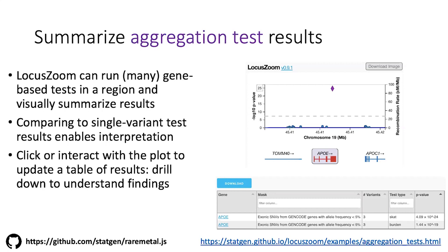If we're using it in LocusZoom, we can have LocusZoom show the results of all the aggregation tests run in a region. On the right, one gene is highlighted in red, meaning at least one of the aggregation tests was significant. It updates a table that shows the genes of the region and your mask — which is a grouping of how the variants were grouped together — showing what test was run and the p-value for that test. This happens interactively as you're panning and zooming. There's also another table where you can see single variant statistics and determine whether your test is driven by a single variant or a true rare-variant aggregation.